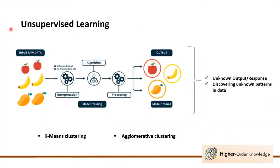Now I'm going to discuss the general unsupervised learning process. Here's the overall workflow: we begin with our input raw data. We don't have any output response or label associated with our data, so we basically begin with interpretation, data mining, and data analysis of the data that we have. There's no training involved.